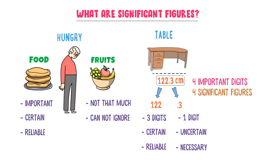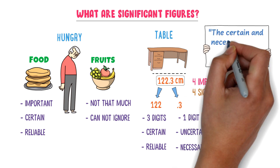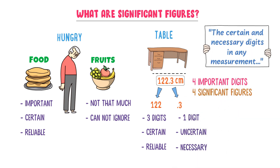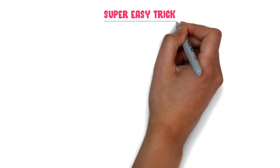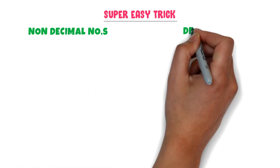Or we say that there are four significant figures present in this measurement. Therefore, we define significant figures as: the certain and necessary digits in any measurement are called significant figures. For example, in 122.3 cm, there are four significant figures. Now let me teach you the super easy trick to identify the total number of significant figures in any number. We have two types of numbers: non-decimal numbers and decimal numbers.